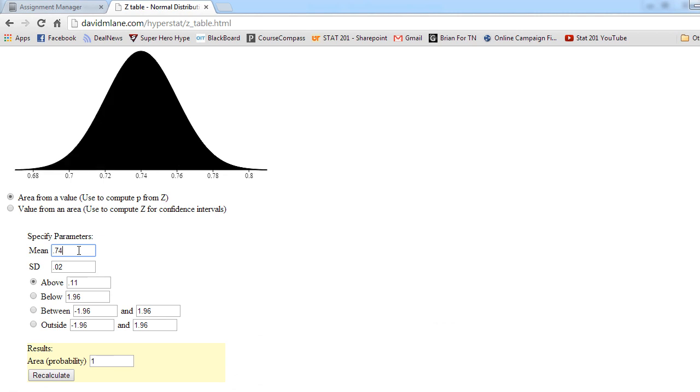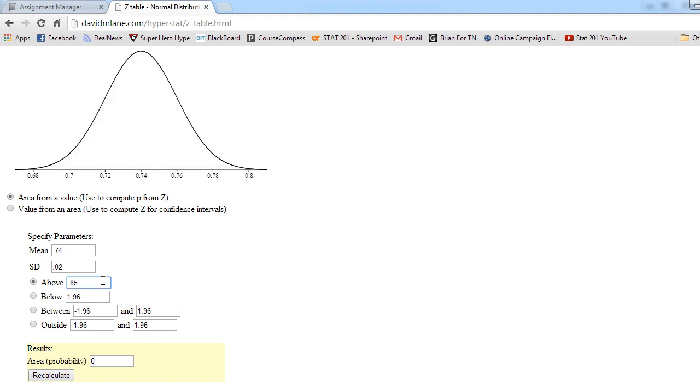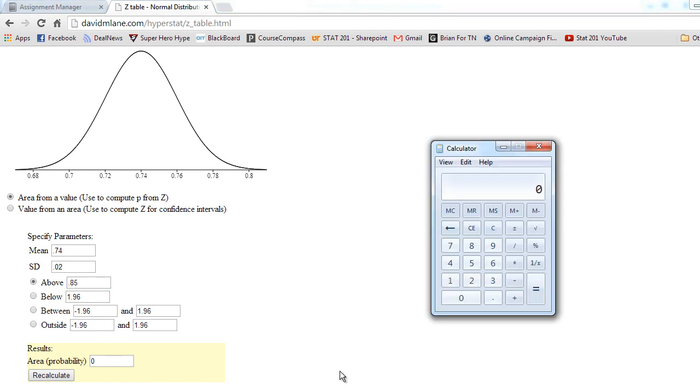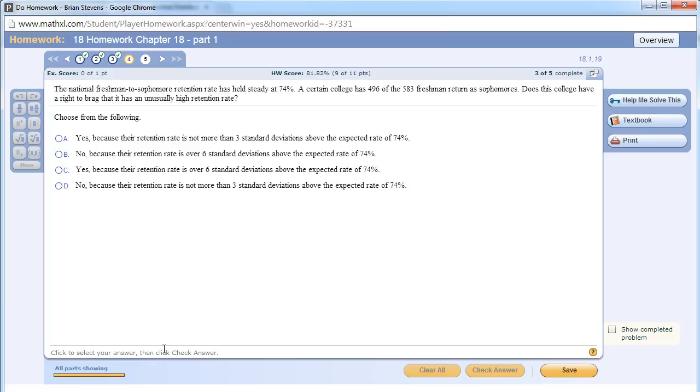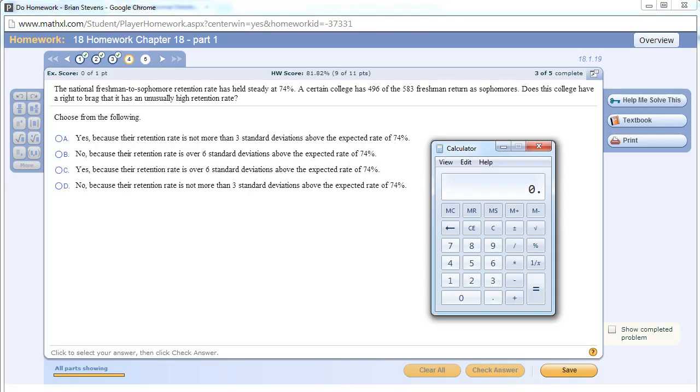We know this about the population. Normally in all the United States, 74% of freshmen return as sophomores. We also need to figure out the standard deviation, so we need to figure this out with p times q over n, square root. For the time being I'm going to put in here above 85% because we want to see that probability, to see how far away that was. Let's find the standard deviation.